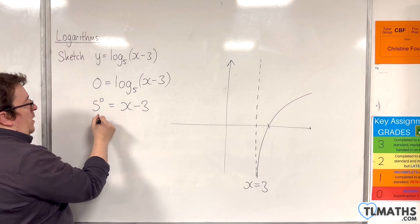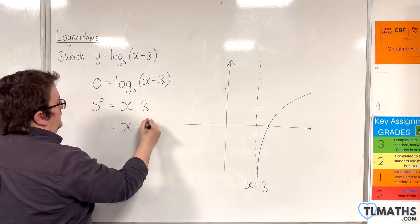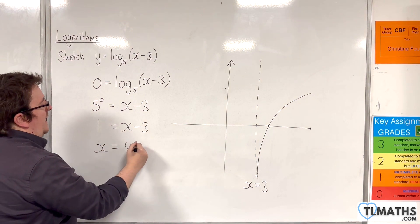Now 5 to the power of 0 is 1, and then add 3 to both sides, we're going to get x is 4.